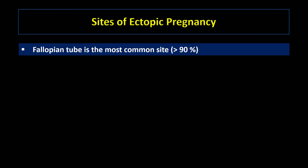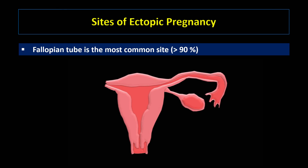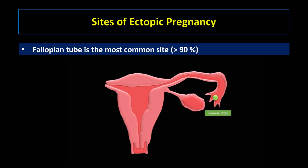Sites of ectopic pregnancy: the fallopian tube is the most common site, accounting for more than 90% of cases. The ampulla is the most common site of tubal ectopic pregnancy, followed by isthmic, fimbrial, and lastly interstitial ectopic pregnancy. Ectopic pregnancy outside the tube can be ovarian, cervical, intramural, abdominal, or in the cesarean scar.